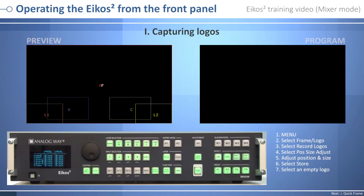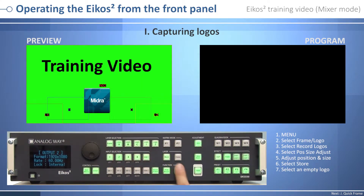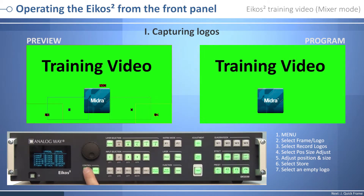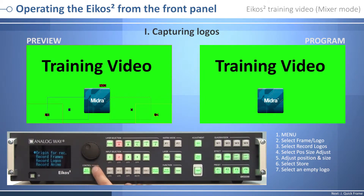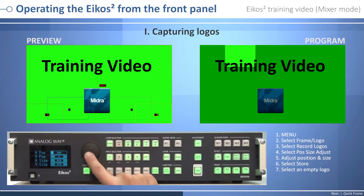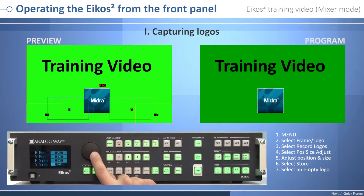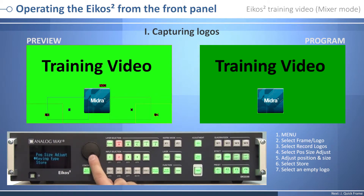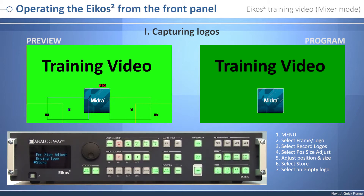Capturing logos: like the frame capture, to capture a logo, display the exact content you want to save on the program or preview screen. Press Exit Menu button, select Frames/Logo, press Enter, select Record Logo, press Enter, then select Position/Size and adjust the position and size settings using the knob, always validating with the Enter button. Then select Store, press Enter, and select a logo number, then press Enter. Your logo is now saved. Please note that logos can also be keyed — for further details, please refer to the user manual.